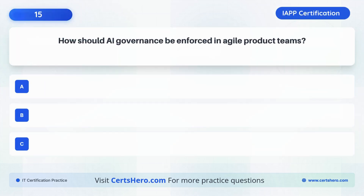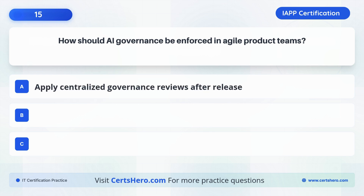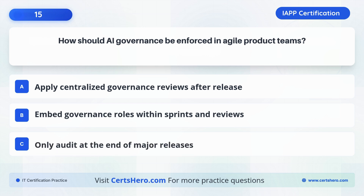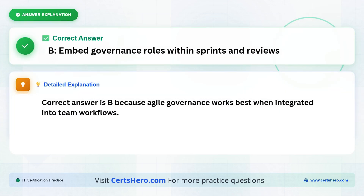How can AI governance be enforced in agile product teams? A. Apply centralized governance reviews after release. B. Embed governance roles within sprints and reviews. C. Only audit at the end of major releases. The correct answer is B: Embed governance roles within sprints and reviews, because agile governance works best when integrated into team workflows.